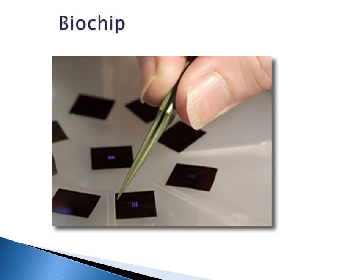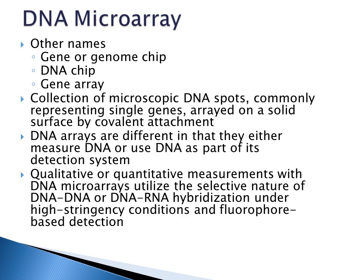Here's an example of a biochip. Different companies have different styles of chips and readers, and you can actually make your own chips by spotting your own sample. There are many names for these: biochips, gene chips, DNA chips, gene arrays, microarrays — just arrays for short. There are many different names for the same thing.